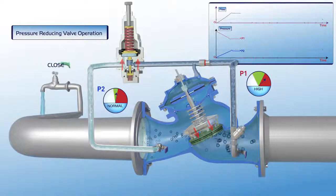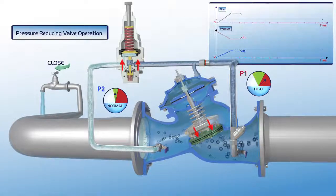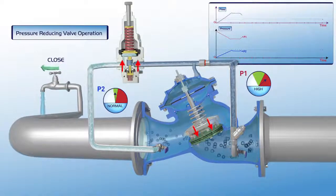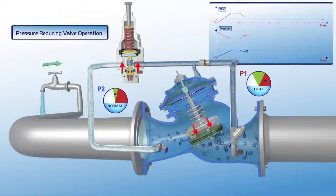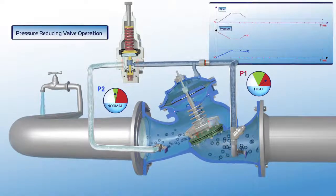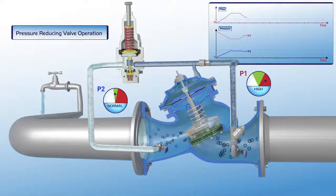When consumer water demand is reduced, the pilot responds immediately. The plunger moves slightly upwards, the pressure in the upper control chamber increases, and the valve closes slightly. The valve's operation stabilizes.